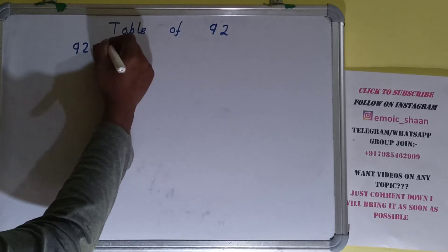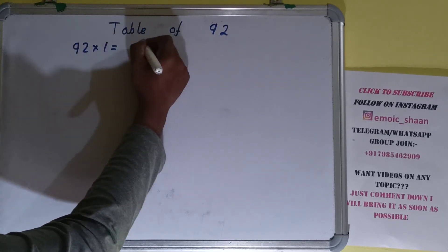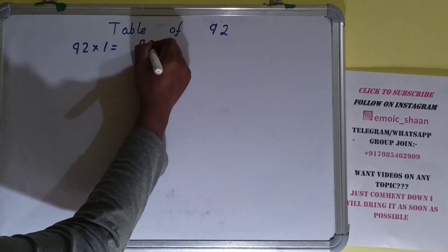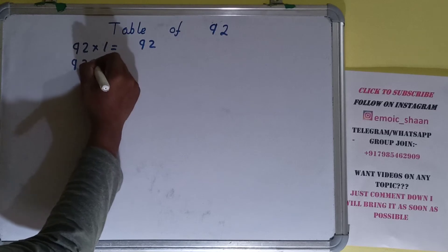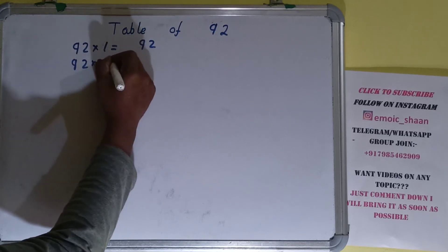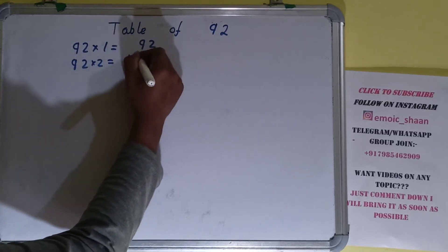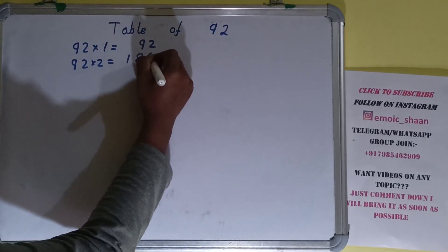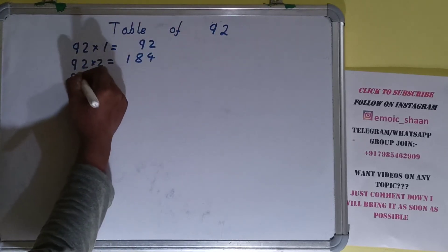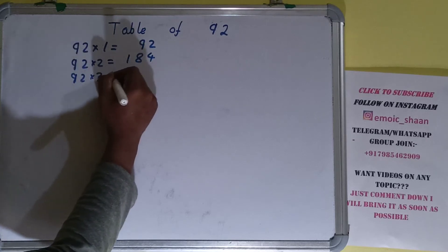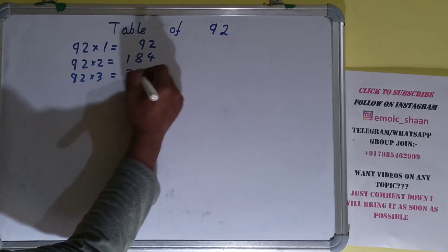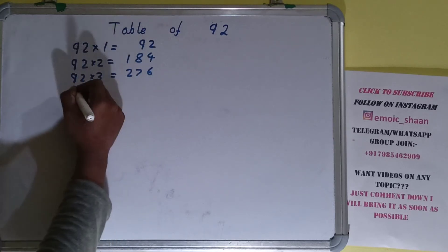So 92 into 1 is 92. 92 into 2 is 184. 92 into 3 is 276.